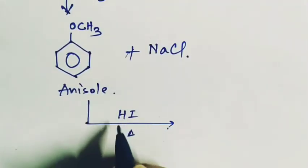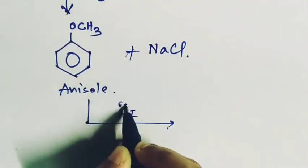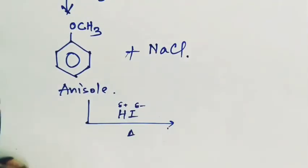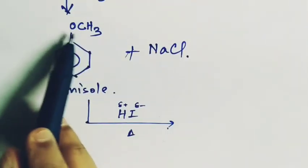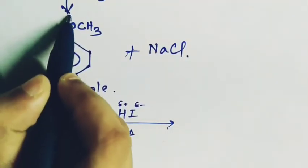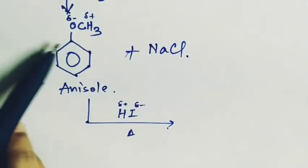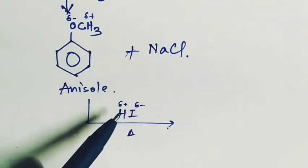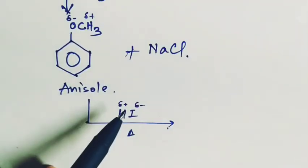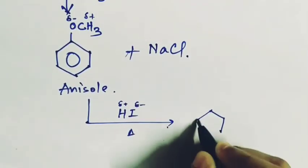In HI, hydrogen is delta plus and iodine is delta minus. Similarly in this OCH3 group, on oxygen atom it is delta minus and CH3 group it has delta plus. So the minus will attract the plus one, so oxygen will attract the H+ ion. So the compound with OH group, that is phenol, will form.